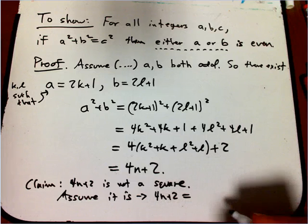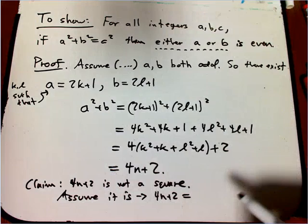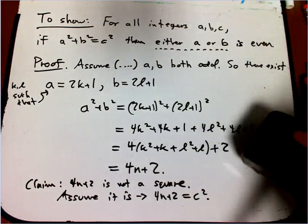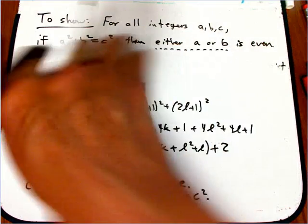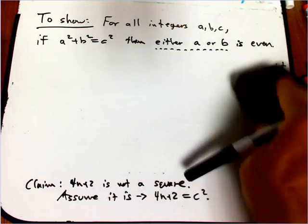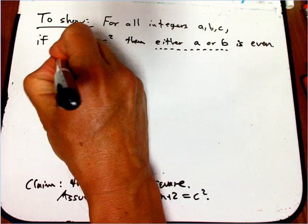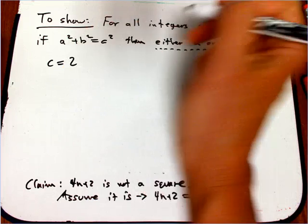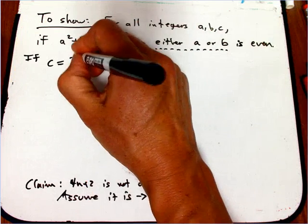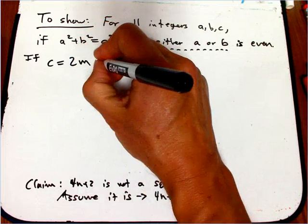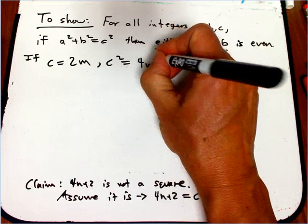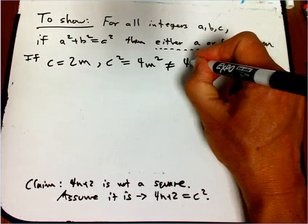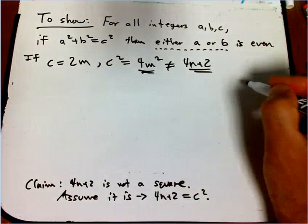So 4n plus 2 equals, and I could call it c squared because that's how it's coming to me. But I'm going to, well, yeah. And I'm going to break it into cases. So if c is even, if c is 2, let's see, I need another letter. If c is 2m, I guess is available, then c squared is 4m squared. That is not going to be of the form 4n plus 2. That's divisible by 4. That's not divisible by 4.